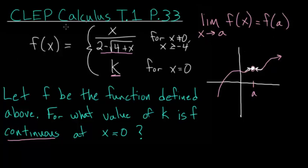Looking at our problem, the point in question is x equals 0. Plugging in x equals 0 gives f of 0 equal to k, and for all nonzero values f of x equals the top equation. So we'll take the limit as x approaches 0 of that equation — since it's defined for all values near 0 — and set that equal to k.